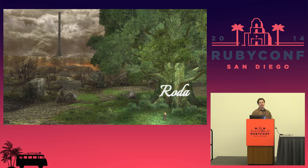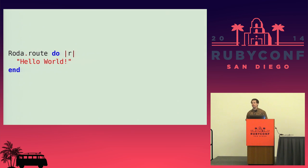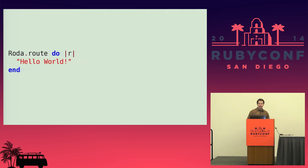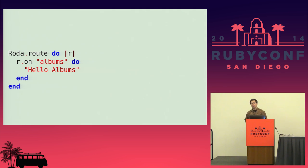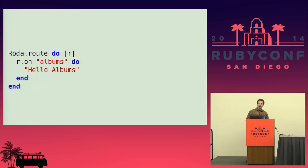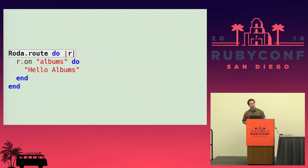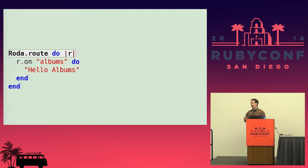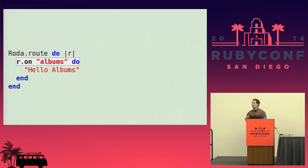Now let me go over how Roda implements the routing tree concept. Starting with Hello World — this Roda app will return 'Hello World' as the response body for every request. While it does not show off the routing tree aspects, it shows that Roda gets the response body from the value the block returns, similar to Sinatra. In almost all Roda apps, you'll want to use Roda's routing tree methods. The first routing tree method is R.on, which creates branches in the routing tree. Calling R.on with the string 'albums' will match if the request path starts with 'albums'.